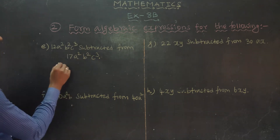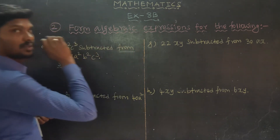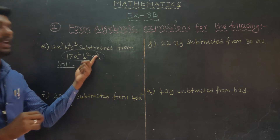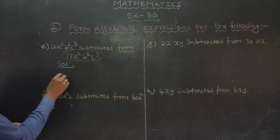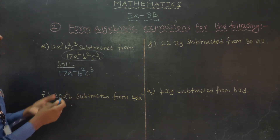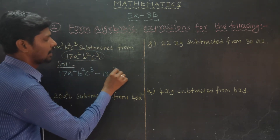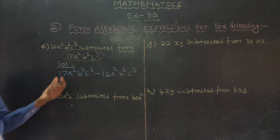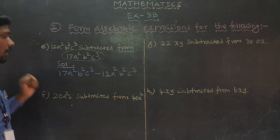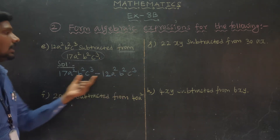Solution. This is the statement: 17 A squared B squared C power 3. We identify the like terms — A squared, B squared, C power 3 are the like terms.